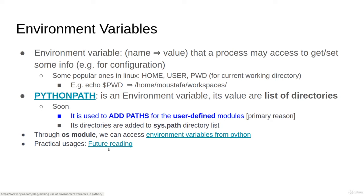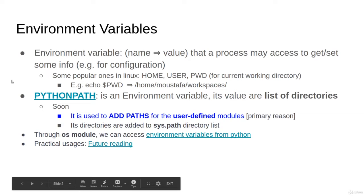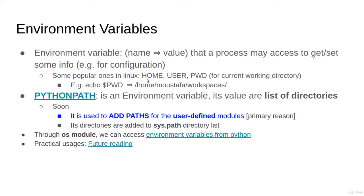There are some common variable names in Linux, for example: the HOME variable, the USER variable, the PWD for the current working directory. In the shell terminal, if you write something like echo $PWD it will give you the current working directory. One of the very critical environment variables for us is the PYTHONPATH environment variable — this variable holds a list of directories.